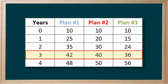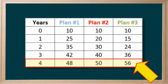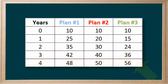And after three years, plan one is still the winner, but by a small margin. And after four years, plan three is now the winner, and plan one is the worst. So what exactly is going on here? Which is the best?